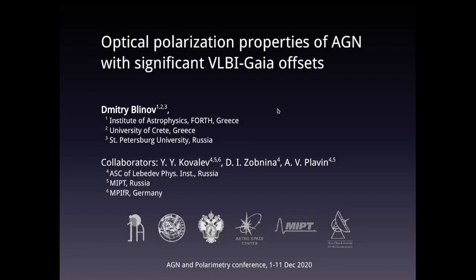Hello everyone, my name is Dmitry Vlinov. I'm a postdoc at the Institute of Astrophysics of Foundation of Research and Technology, HELLAS. I would like to present our work entitled Optical Polarization Properties of AGN with Significant VLBI-Gaia Offsets. This work has been done in collaboration with Yuri Yurevich Kovalev, Daria Zobnina, and Alexander Plavin.